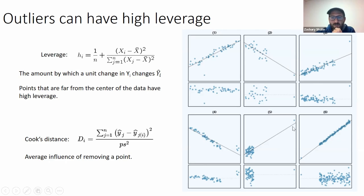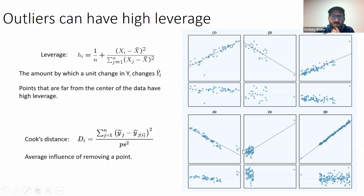Here's example five, where the residual is low and the point is close to the line, but the reason it's close to the line is because it would have pulled the line close to itself wherever it was, because the other points are just a blob. There's no linear relationship among those points, so the best-fit line is going to go to wherever you put a point that's far away from the others, because it has high leverage and also a lot of influence.